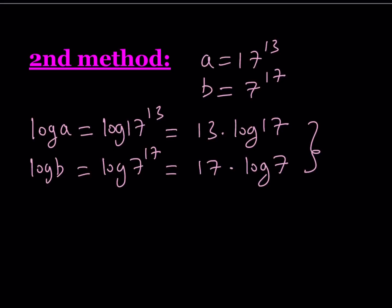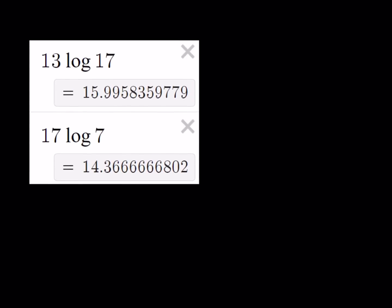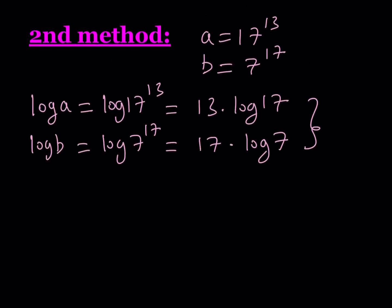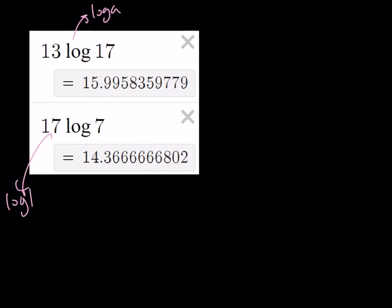So here's the million dollar question. Which of these numbers is larger? Obviously, you can go ahead and evaluate these numbers by using a calculator or something else and then look at the comparison. But for this purpose, I'm just going to give you those values. So we're looking at two numbers here: 13 log 17 and 17 log 7. The first one is basically log a, and the second number is just log b. So we do see that log a is greater than log b.